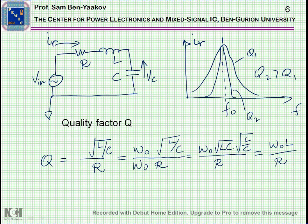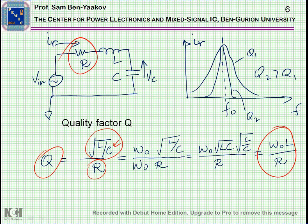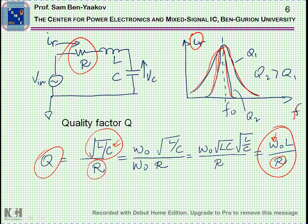Another point to take into account is the quality factor, defined as the ratio between the characteristic impedance — which is the square root of L over C — over R, the total resistance in the circuit. You can also express it as omega-sub-0 times L over R, where omega-sub-0 is the angular resonant frequency. The higher the Q, the sharper the response — that is, the response of the current as a function of frequency. For a low Q you get a broader response; for a high Q you get a very sharp response.